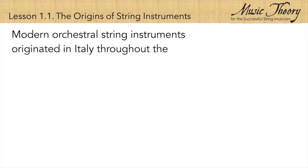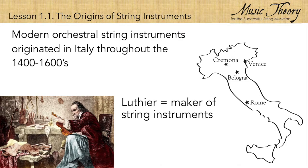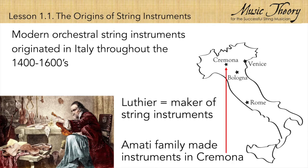Modern orchestral string instruments originated in Italy throughout the 14th through 1600s. They were made by artisans known as luthiers, who spent their lives developing and perfecting the design of these string instruments. The most famous family of luthiers was the Amati family, who spent over a century in Cremona, Italy, developing and perfecting their string instruments.